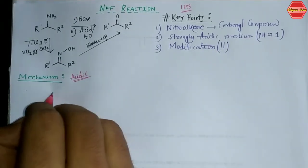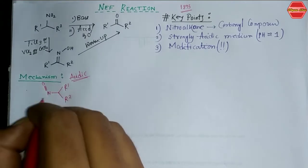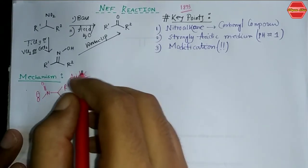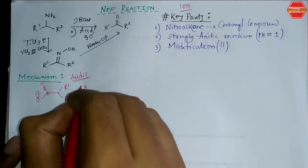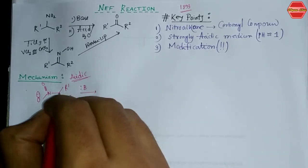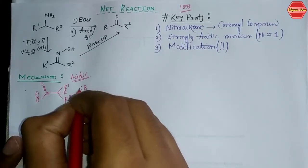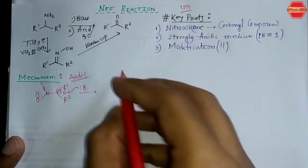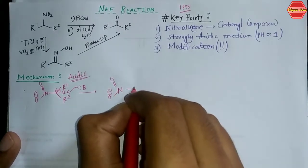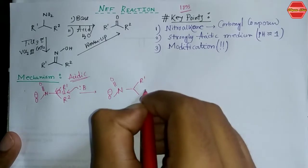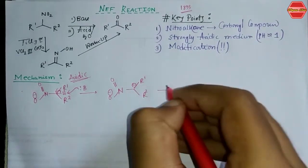In the acidic method, we start with a nitroalkane having substituents R1 and R2 with an O⁻ group. If we use a base (generalized as B), there is an acidic hydrogen adjacent to the nitro group, making it very acidic in nature. This hydrogen is abstracted by the base, giving us a carbanion with a negative charge on the carbon bearing R1 and R2.